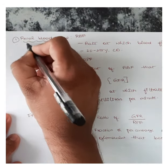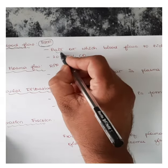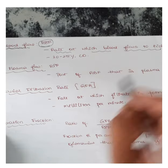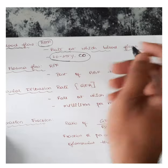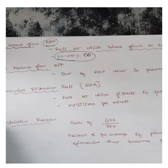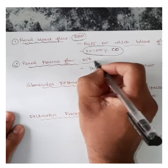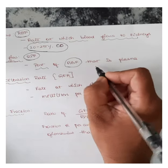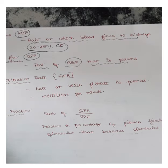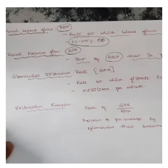Number one is renal blood flow, also referred to as RBF. RBF refers to the rate at which blood flows to the kidney. Around 20 to 25 percent of the cardiac output moves to the kidneys. The other important terminology is renal plasma flow, or RPF. RPF refers to the part of renal blood flow that is plasma — that is, of the total renal blood flow, what portion is plasma flowing through the kidney.